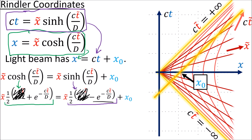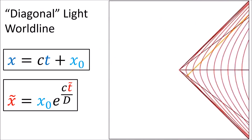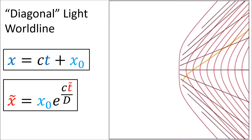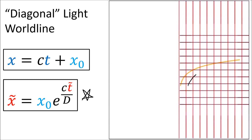Remember, cosh equals one half of a positive exponential plus a negative exponential, and sinh equals one half of a positive exponential minus a negative exponential. The positive exponentials on both sides cancel out, and moving one half of the negative exponential to the other side gives us the left-hand side as x-tilde times e to the minus ct-tilde over d. We can move this negative exponential to the other side through division, which changes it to a positive exponential. So now we have the equation of the beam of light in Rindler coordinates: x-tilde equals the constant x0 times e to the ct-tilde over d.